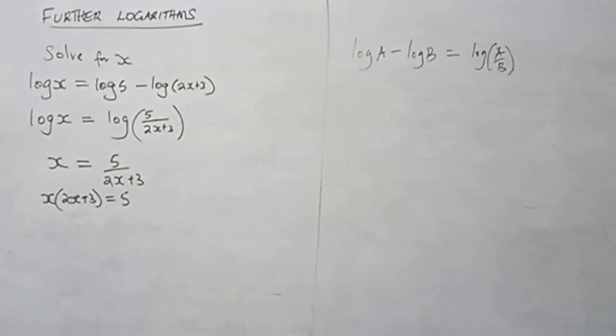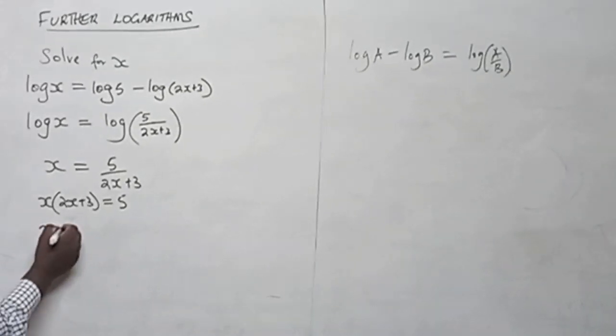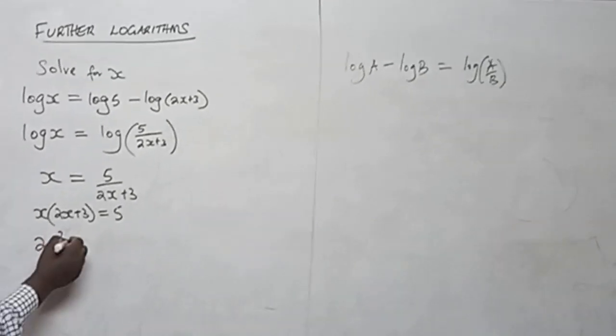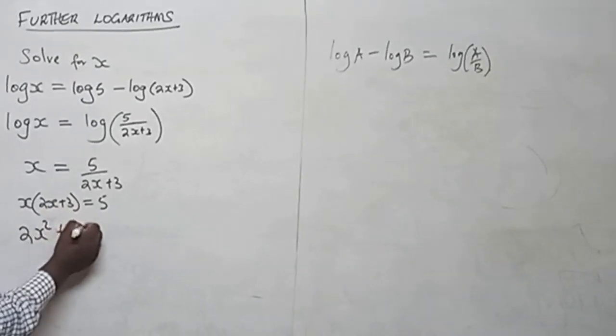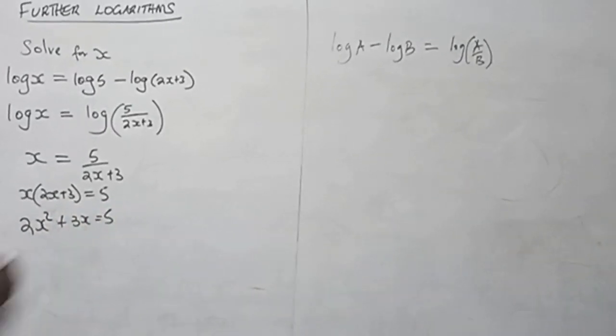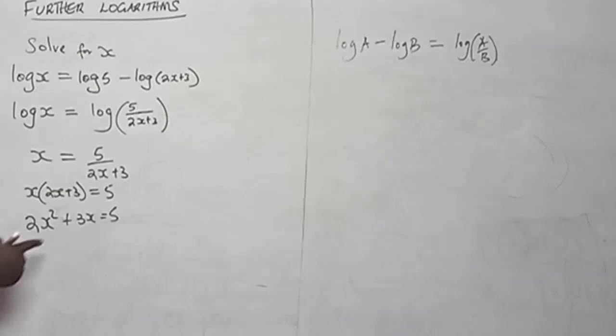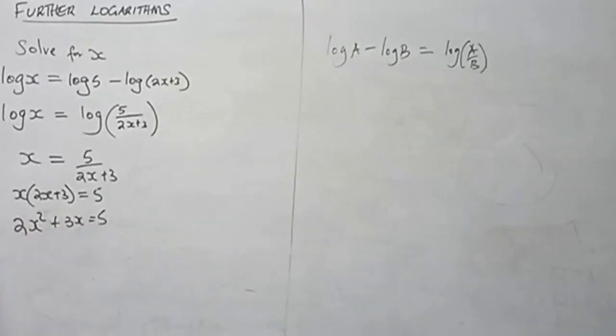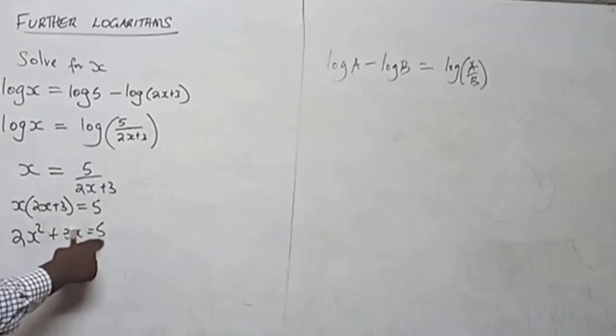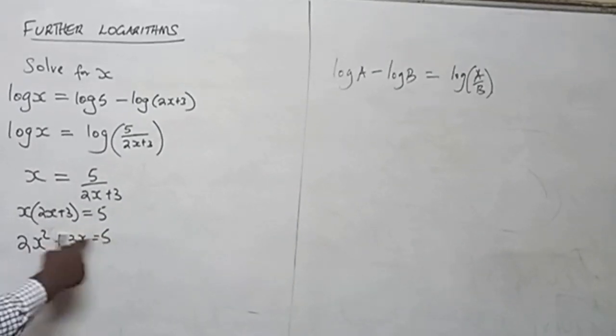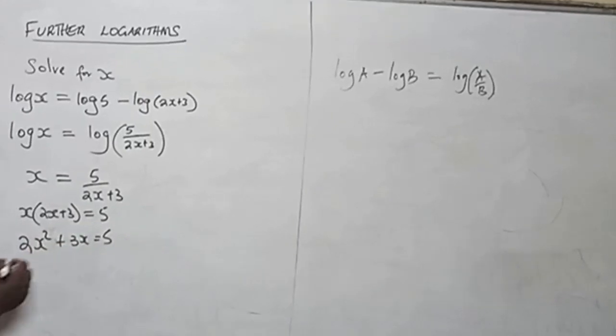Now let's remove the bracket. We have 2x squared plus 3x is equal to 5. Then to make this quadratic equation, we are going to subtract 5 from both sides.